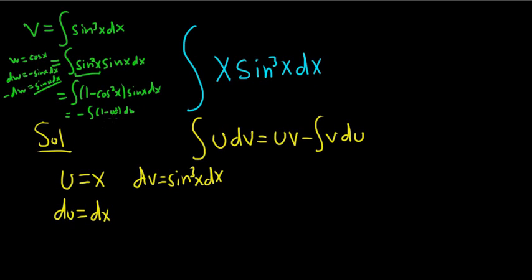Right, it's w, not u. So sine x dx is negative dw. Let's distribute this negative. It's getting so small, so hard to see. W squared minus 1 dw. Integrating this, you get w cubed over 3 minus w plus a constant.